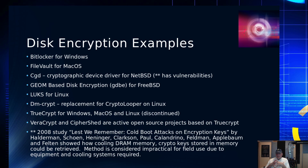Some examples of disk encryption: there's BitLocker for Windows and FileVault for macOS. There's CGD, the cryptographic device driver from NetBSD — vulnerabilities have been found in that one, as well as in all of them. There's also GBDE, geo-based disk encryption, for FreeBSD. There's LUKS for Linux, and dmcrypt, which is a replacement for the older crypto looper on Linux. And of course there's TrueCrypt for Windows, macOS, and Linux, though that has been discontinued.